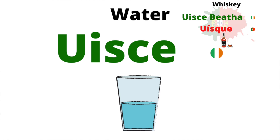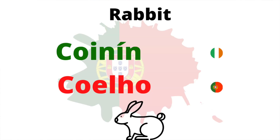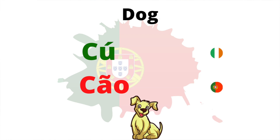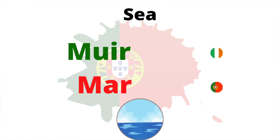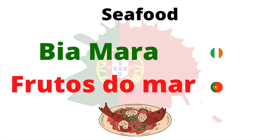The Irish for a rabbit is coinín, and in Portuguese coelho. A dog in Irish can be known as a cú — technically a hound — and in Portuguese cão. The sea in Irish is muir, and in Portuguese mar, which brings us to the Irish for seafood: bia mara, and in Portuguese frutos do mar.